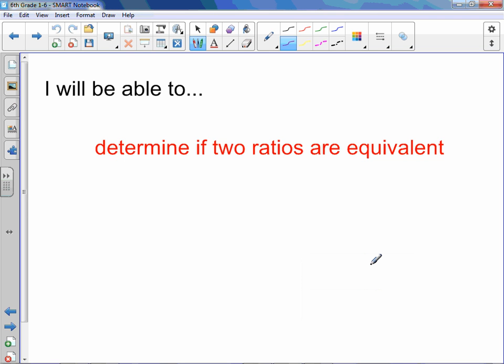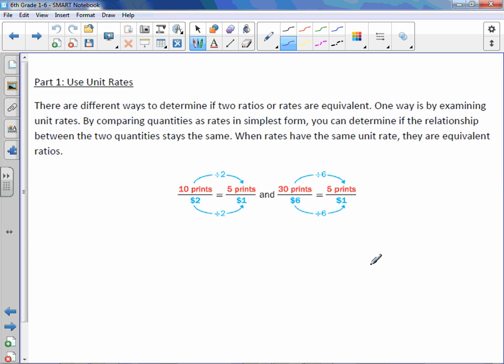Chapter 1 Lesson 6: Equivalent Ratios. Today you will be able to determine if two ratios are equivalent. There are different ways to determine if two ratios or rates are equivalent. One way is by examining unit rates. By comparing quantities as rates in simplest form, you can determine if the relationship between the two quantities stays the same. When rates have the same unit rate, they are equivalent ratios.